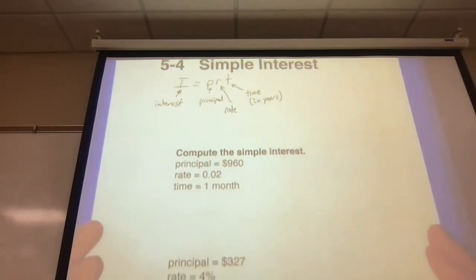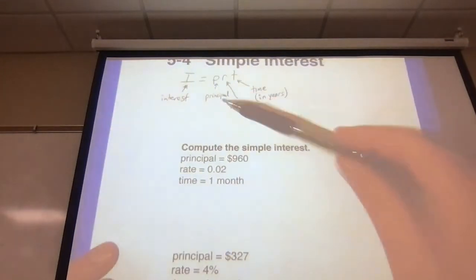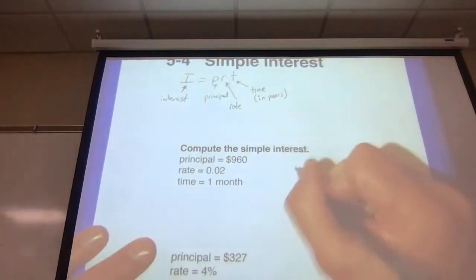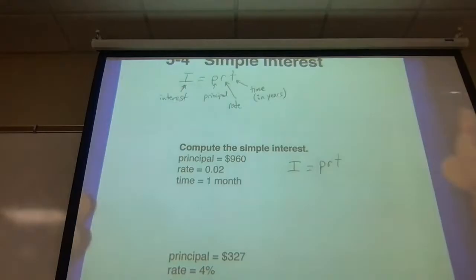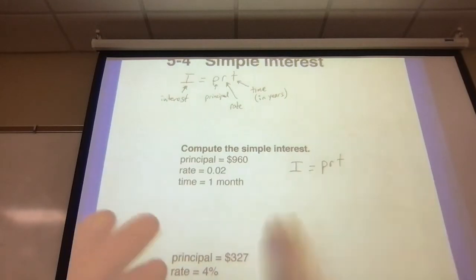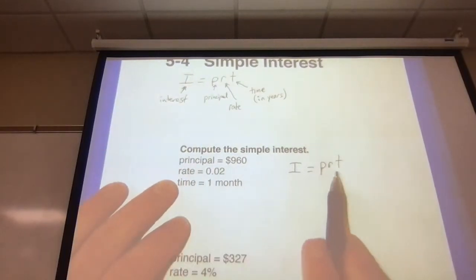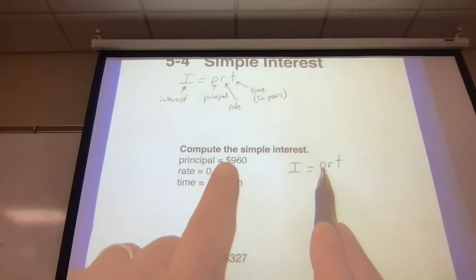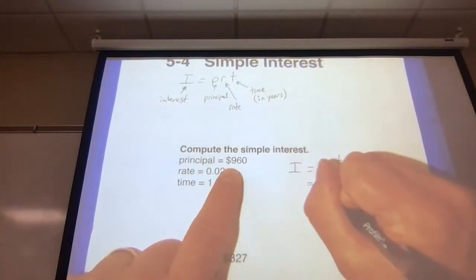And then what they're going to do is give you an example where you're going to use that formula to come up with the interest. They want you to find the simple interest. So to do this, you're going to use your formula I equals PRT, and we're going to need a calculator for this. Now it's just a matter of putting the things in here. Simple interest, we have PRT. P stands for principal. Principal is the amount of money, so that's going to be 960.